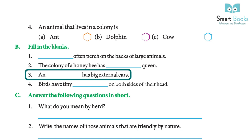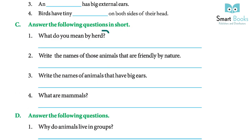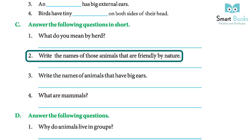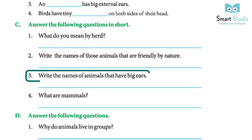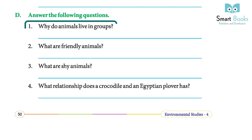Fill in the blanks: the colony of a honeybee has one queen bee. An elephant has big external ears. Birds have tiny holes on both sides of their heads. Answer the following questions in short: What do you mean by herd? Animals that move in groups and have a leader who guides the other members away from danger are known as a herd. What mammals are: animals that have external ears and body hair.